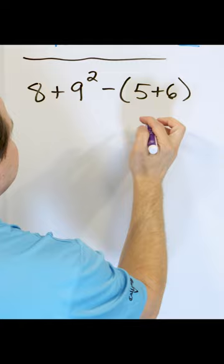Very first step, what do we do? Always parentheses. Five plus six, this becomes 11.